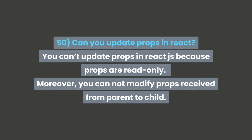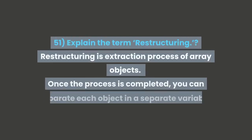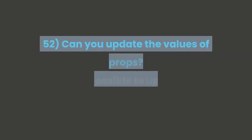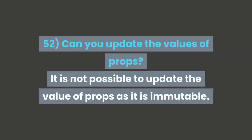Question 51: Explain the term destructuring. Destructuring is an extraction process of array objects. Once the process is completed, you can separate each object into a separate variable. Question 52: Can you update the values of props? It is not possible to update the value of props as it is immutable.